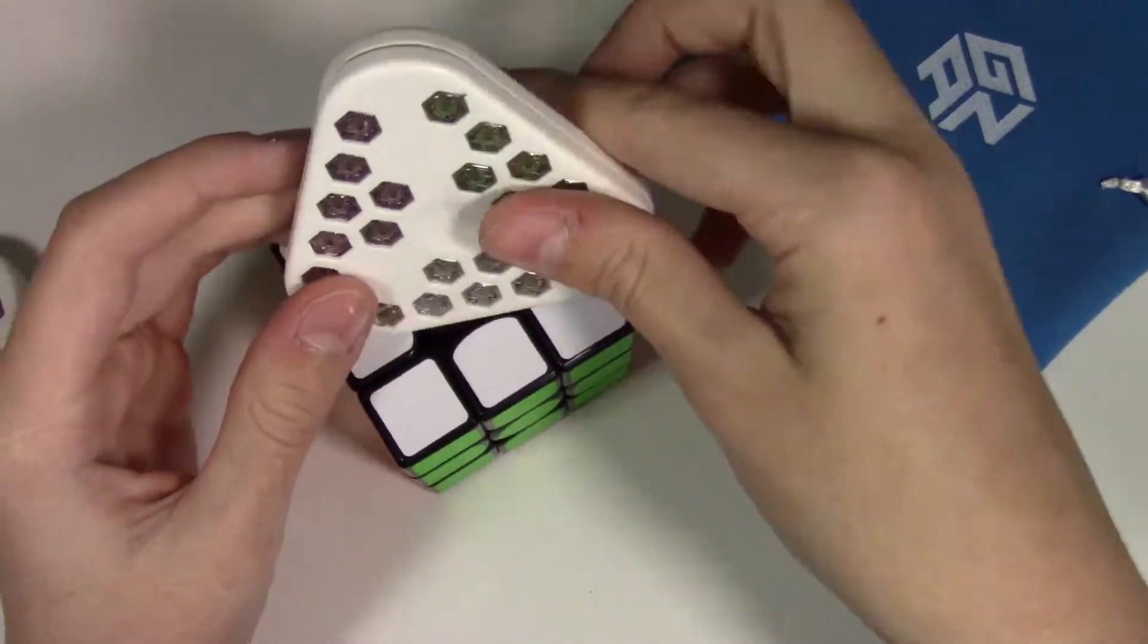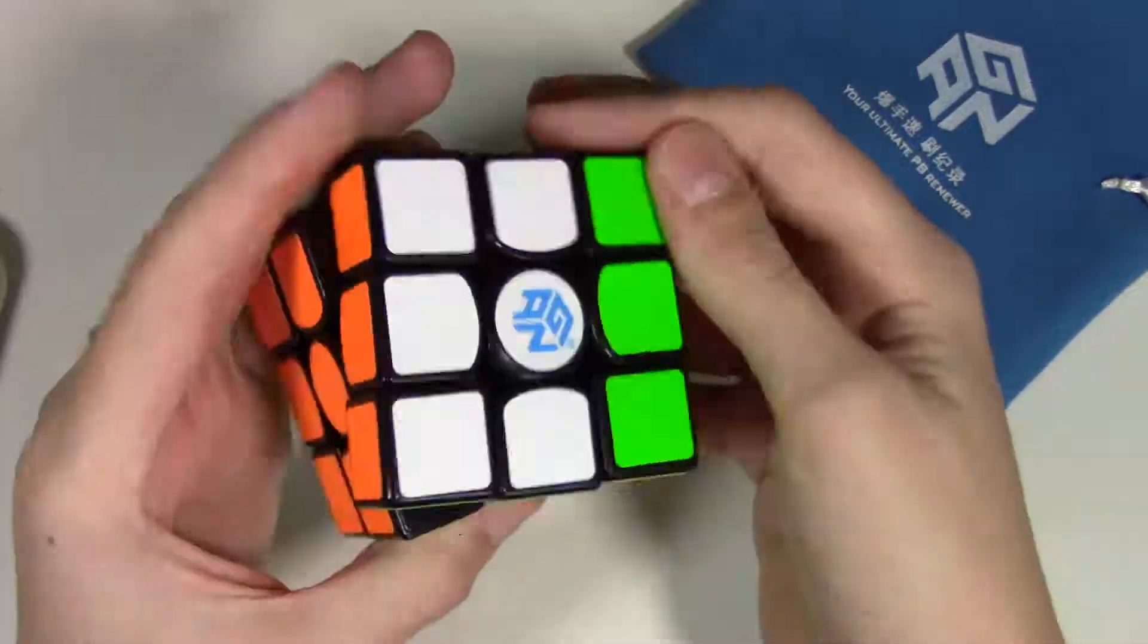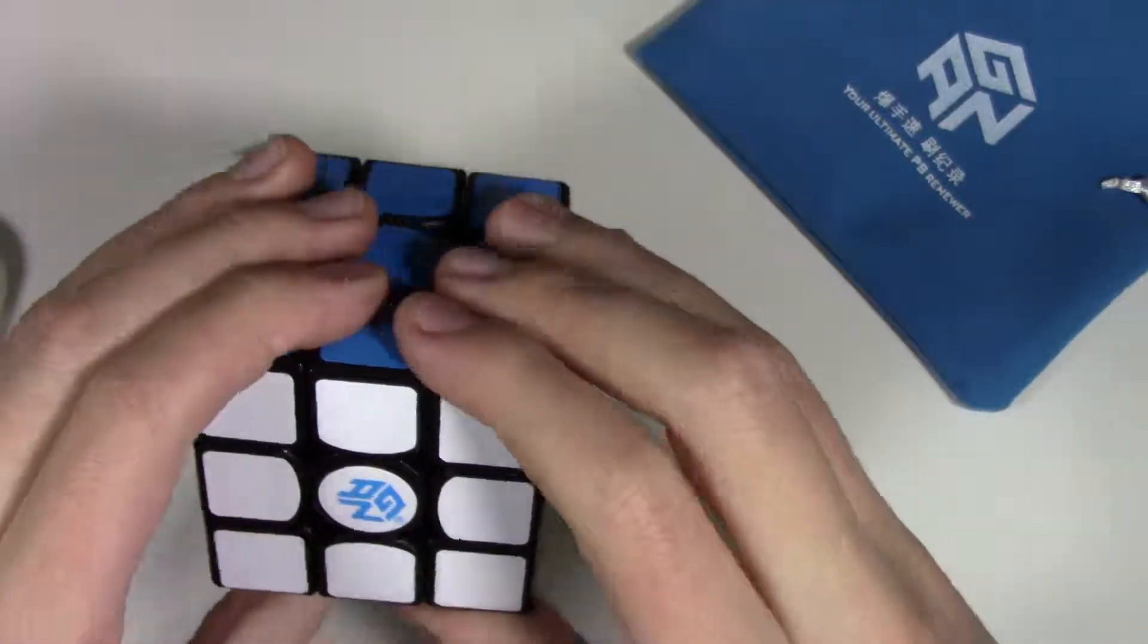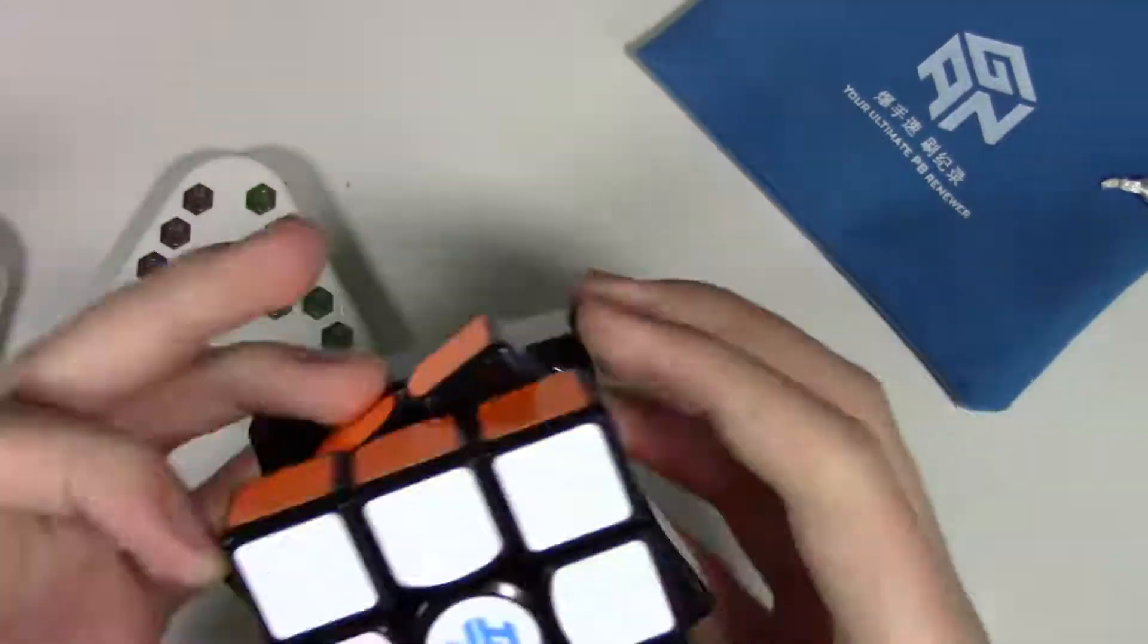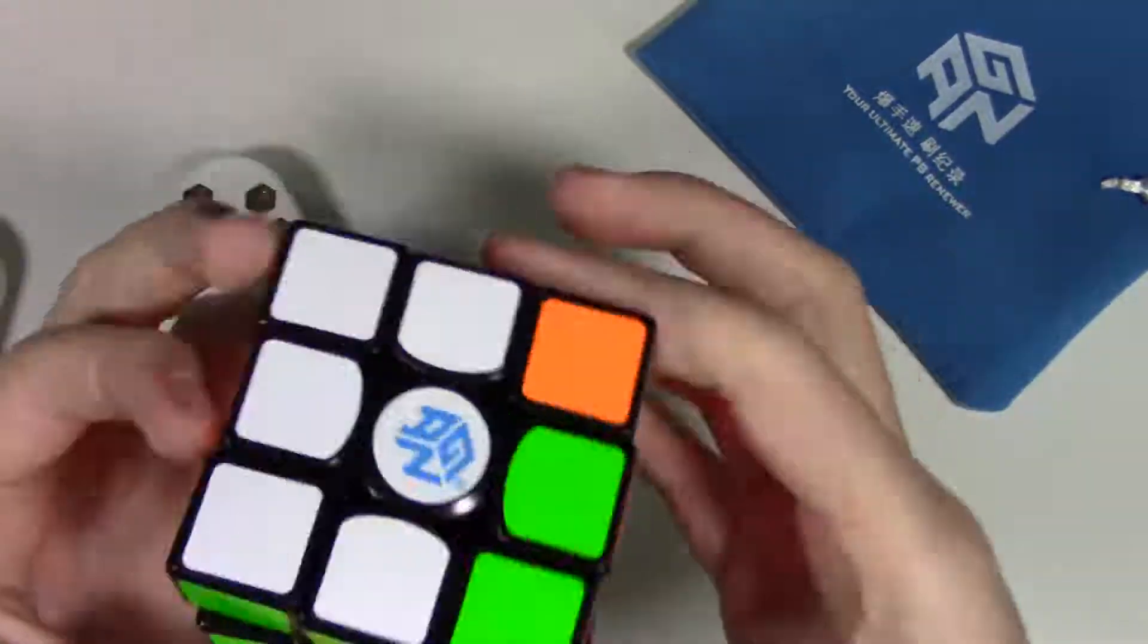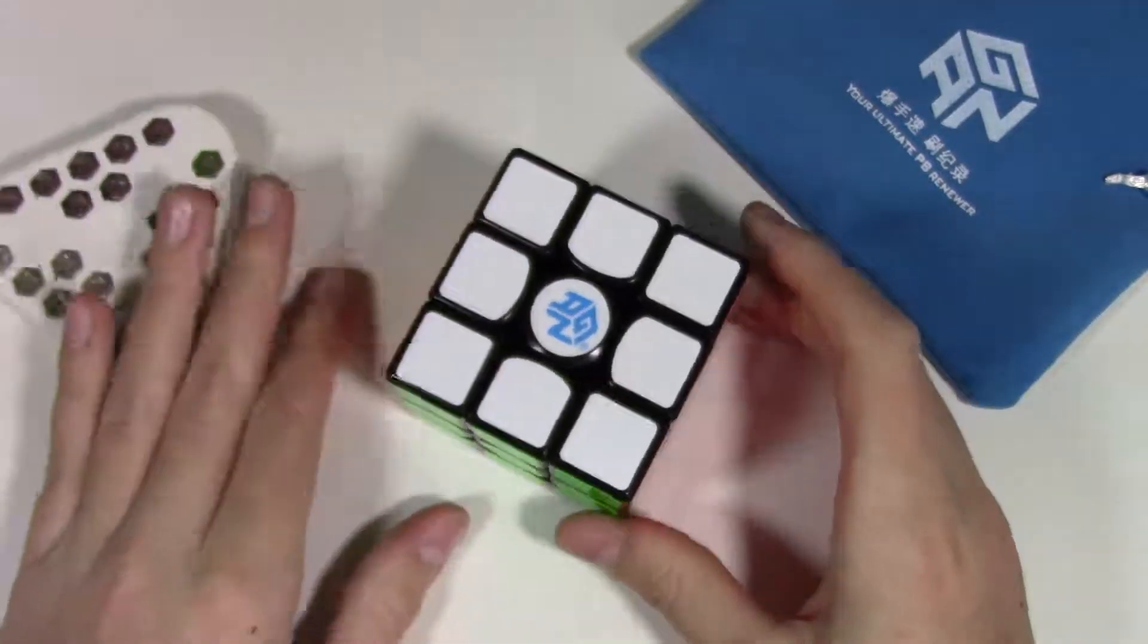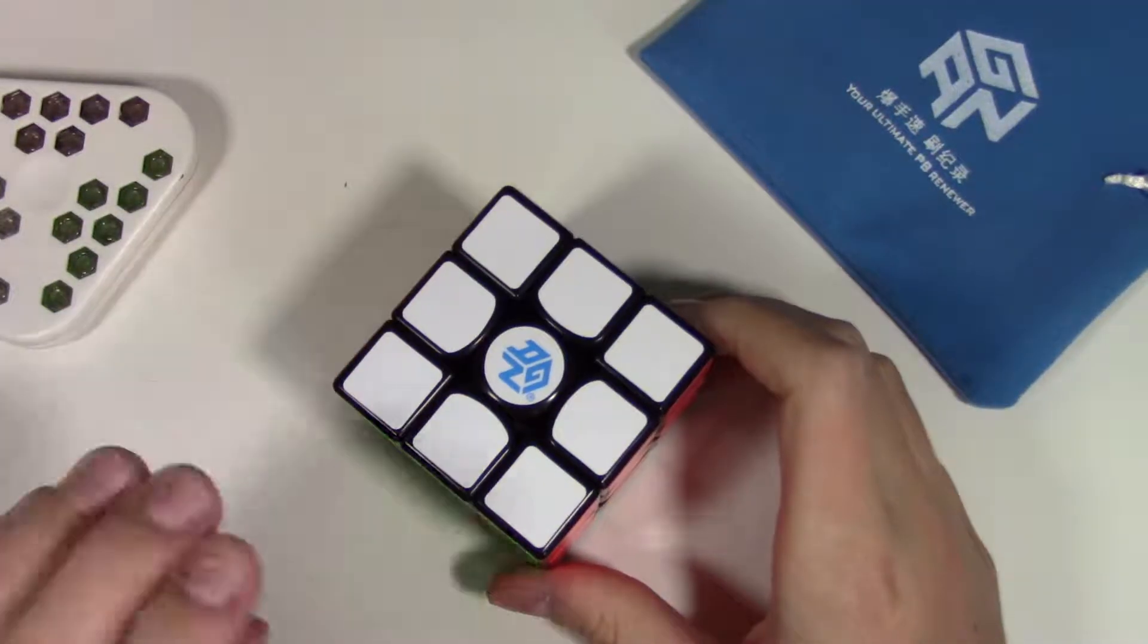And maybe I might change it to the green, since it is a little bit loose. Tensions are actually pretty normal. So yeah, green might be better for me. But wow. This cube is great. Thanks for watching this video. And I'll see you in my next one. Bye.